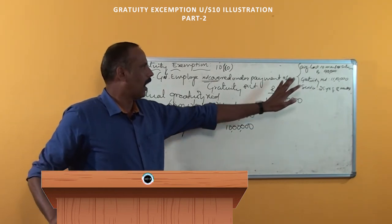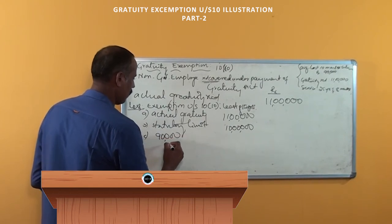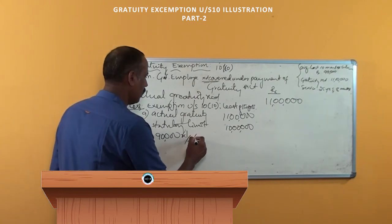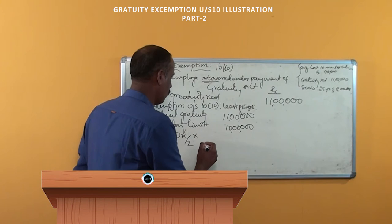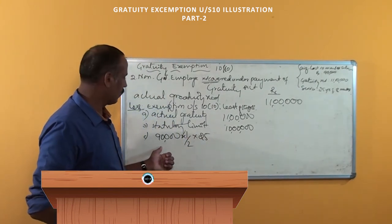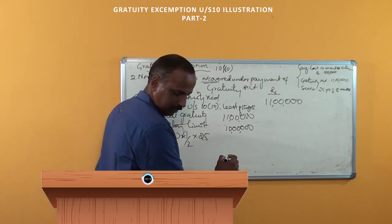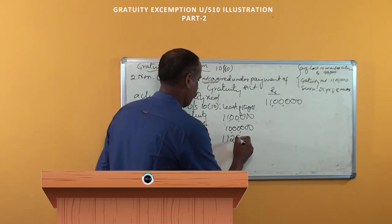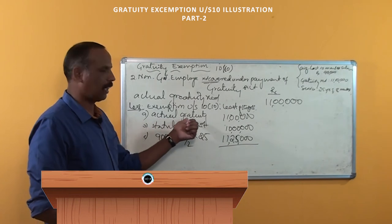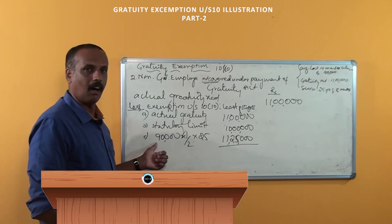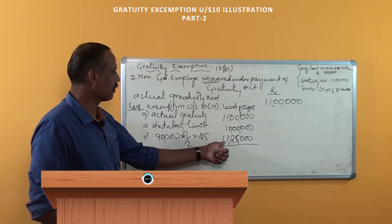The third item is half-month salary on the basis of average salary. Average salary multiplied by one-half, into the number of completed years of service. Number of completed years means we should not consider 26 years — we have to consider only 25 years. So here: 90,000 × half = 45,000, multiplied by 25, that is rupees 11,25,000. So the three amounts are: actual gratuity 11 lakh, statutory limit 10 lakh, and half-month salary times completed service years = 11,25,000.